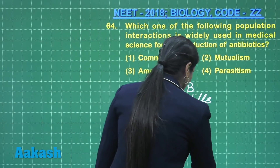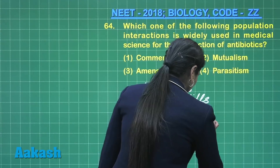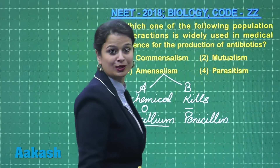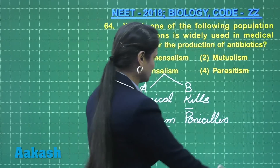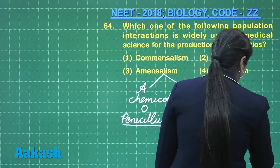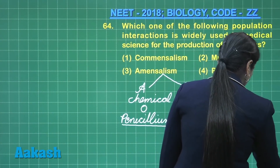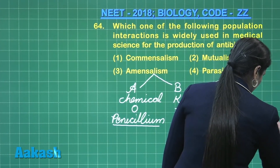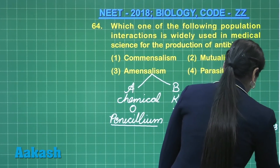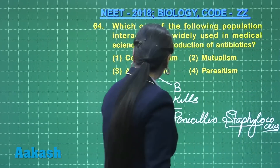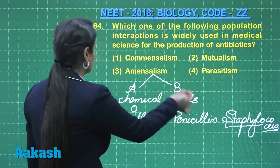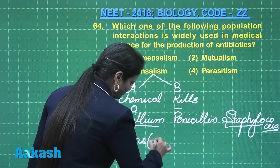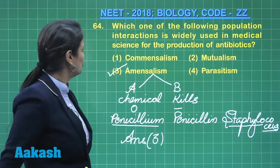One of the best examples of amensalism is Penicillium. This fungi secretes the antibiotic penicillin, which has the ability to kill gram-positive bacteria — for example, Staphylococcus. So the right answer for question 64 is option number three.